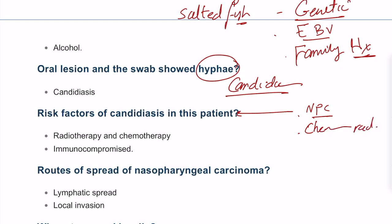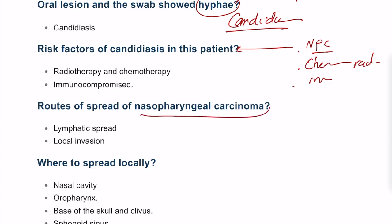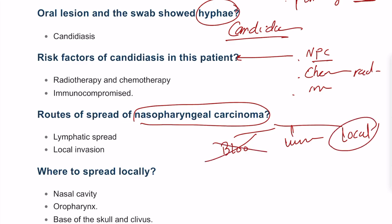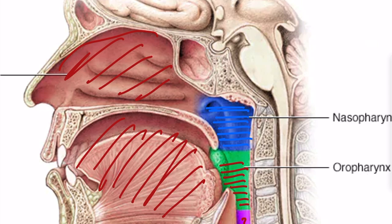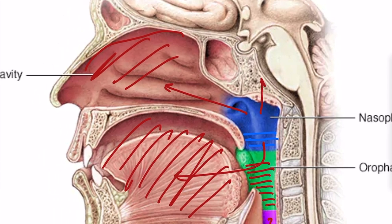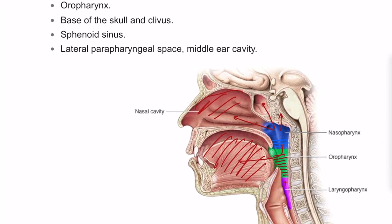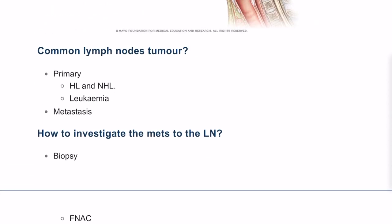Nasopharyngeal carcinoma can spread via blood, lymphatics, and local extension. Blood spread is uncommon; local spread is the primary concern. Locally, the tumor can spread anteriorly to the nasal cavity, inferiorly to the oropharynx and oral cavity, superiorly to the base of skull and sphenoid sinus, and laterally to the parapharyngeal spaces and middle ear cavity.